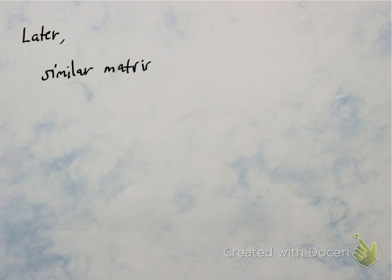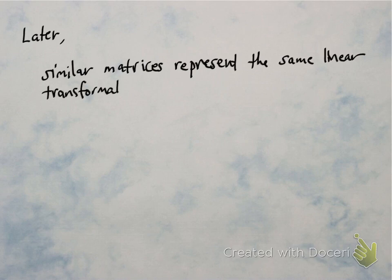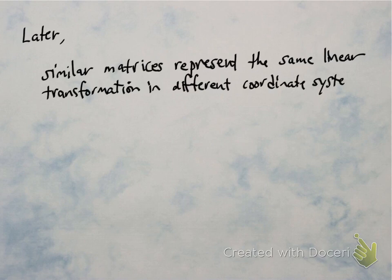Later, what we're going to see is similar matrices represent the same linear transformation, but just in terms of a different basis, so a different choice of coordinate system. This will end up being very useful when we start changing coordinates in order to study systems of linear equations, and we're going to find coordinates that are suitably adapted to solving the problems we're interested in.